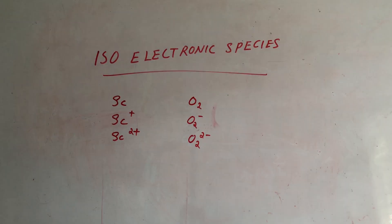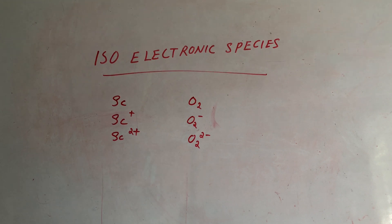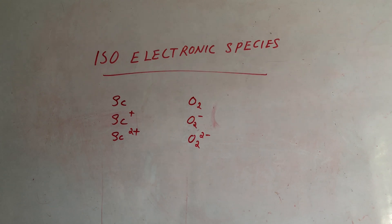Hi Friends! We are going to learn about isoelectronic species. What is isoelectronic species? Same number of electrons — species with the same number of electrons are isoelectronic species. If there are two elements with the same number of electrons, they are isoelectronic species.